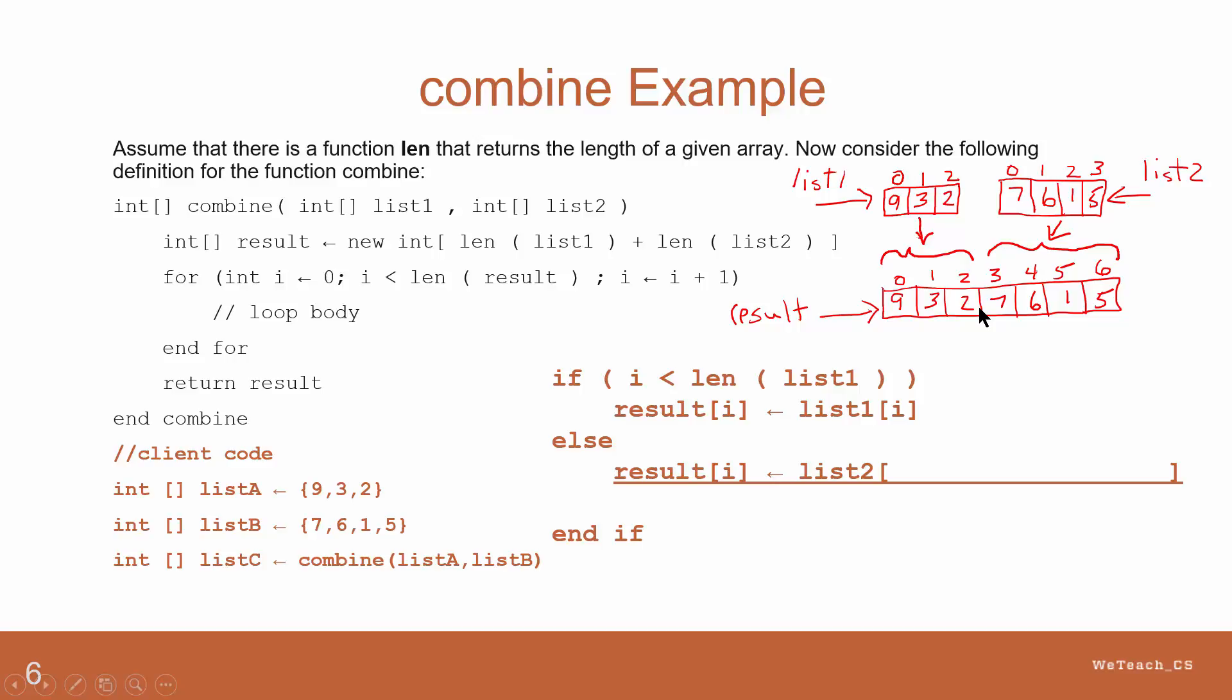When the value of i reaches the length of the first list, it means we've cleaned out the first list and are ready to load the second one. The if condition is false now. The trick is how to get the values of list2 into the proper positions of the result array.